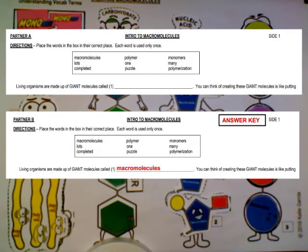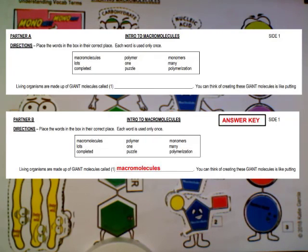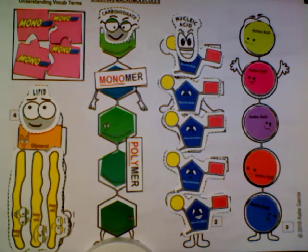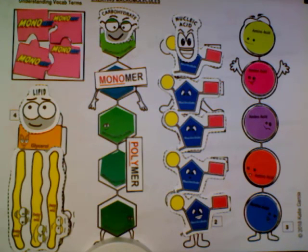Then when you move to side two, partner B will be completing problems 10 through 15, and partner A will have the answers. Partner A is going to guide or coach, checking partner B's answers. You'll continue for the rest of the worksheets, flipping back and forth being either the partner answering the questions or the coach. If you have any questions, please feel free to ask your sub, as she is a highly qualified biology teacher who can certainly support you.